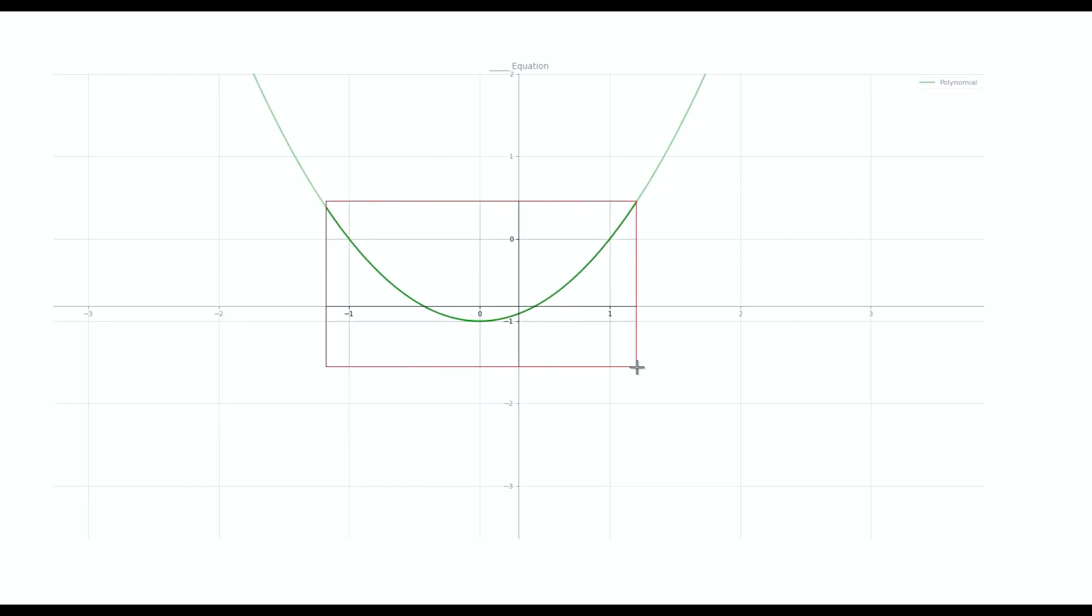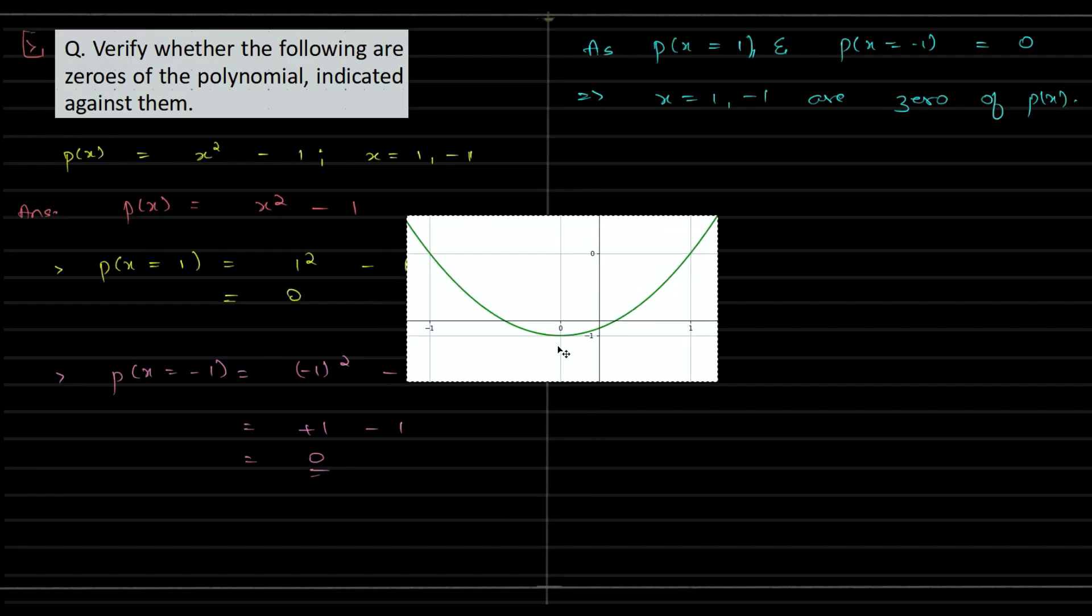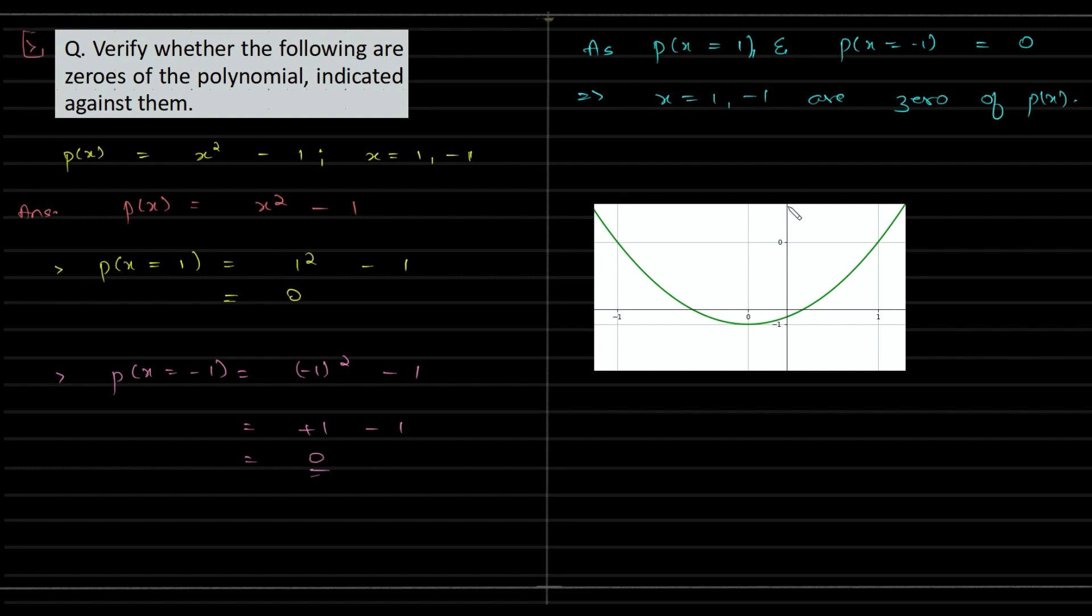Now we know that this is your y-axis, that's where we have your p(x), and this is your x-axis. So for an output of zero, what should be the input? For that I need to trace along the horizontal. So this and this are the points wherein the graph is crossing. So the corresponding x-axis is minus one and plus one.